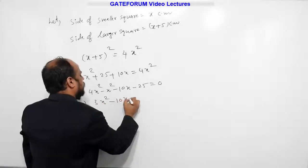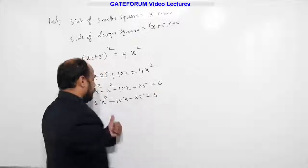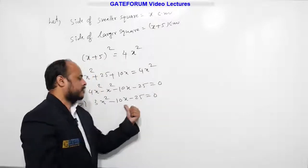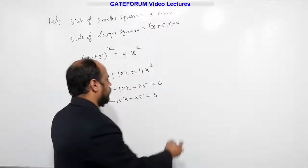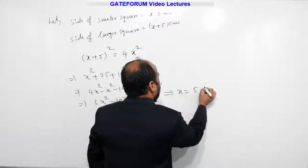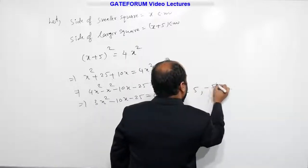It is looking like Ax square plus Bx plus C equal to 0. Solve the equation. You will find x values here from this: 5 and minus 5 by 3.